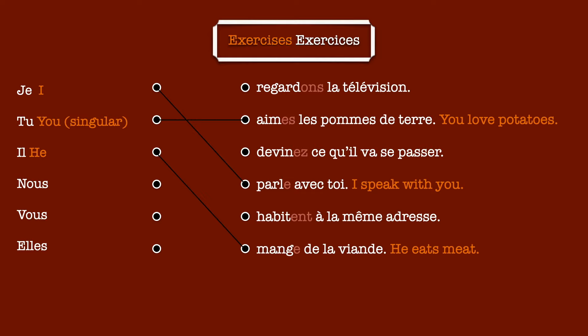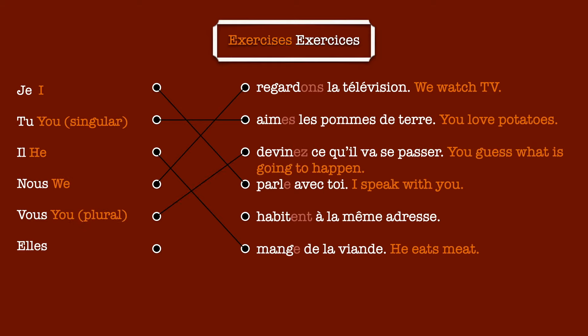Now, let's move on to the first person plural. 'Nous regardons la télé' — We watch TV. As we have seen, the first person plural ends with -ons. According to your memory, how do you conjugate the next sentence? 'Vous devinez ce qui va se passer' — You guess what is going to happen. And the last one: 'Elles habitent à la même adresse' — They live at the same address. In this sentence, what we can understand is that a group of women exclusively lives at the same address.